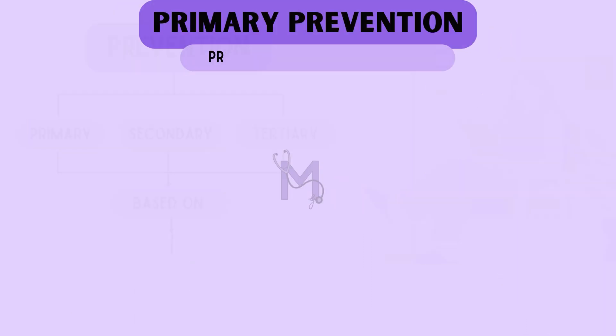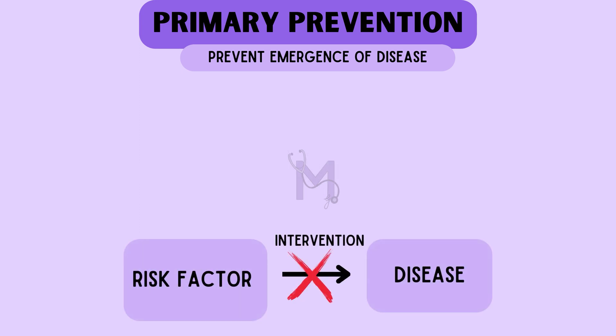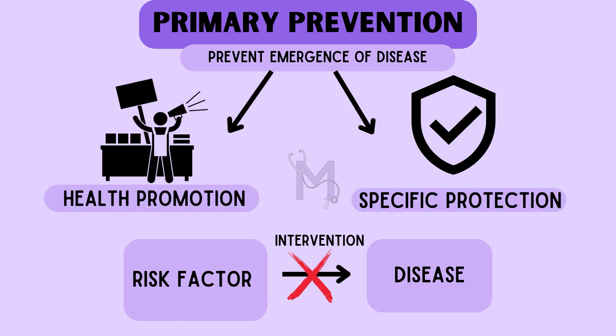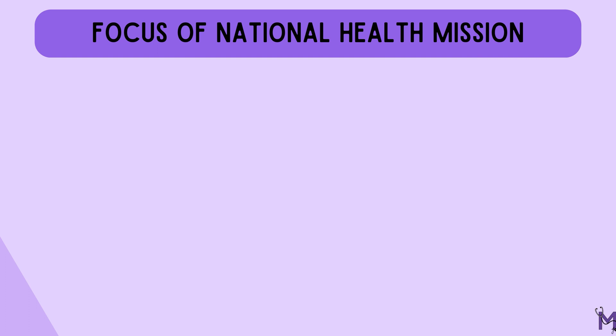Primary prevention includes cases where action is taken prior to the onset of disease — the disease is not given a chance to occur. At this level, we intervene when the risk factors for a particular disease are present but the disease has not yet occurred. In such cases, to prevent the emergence of disease, it is necessary to initiate health promotion as well as taking specific protection wherever possible.